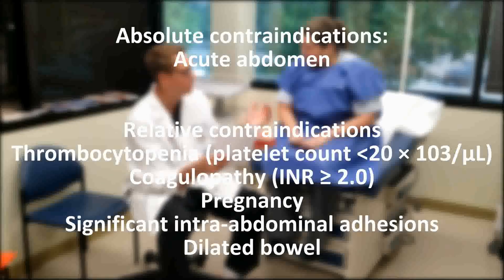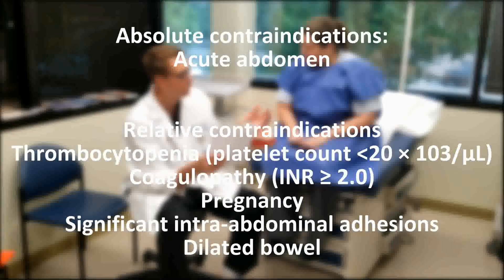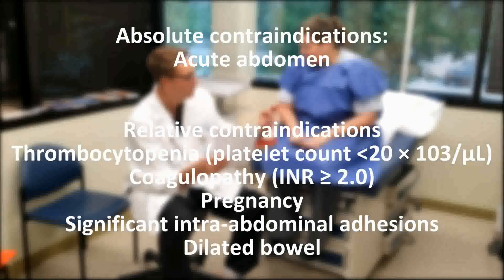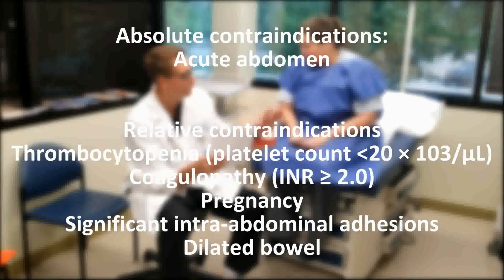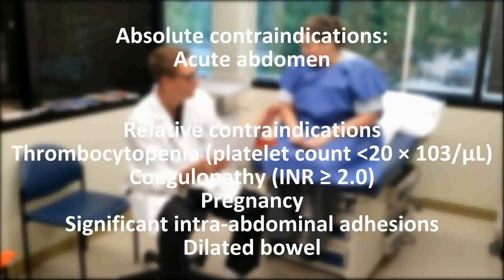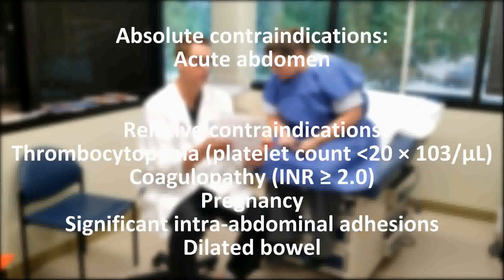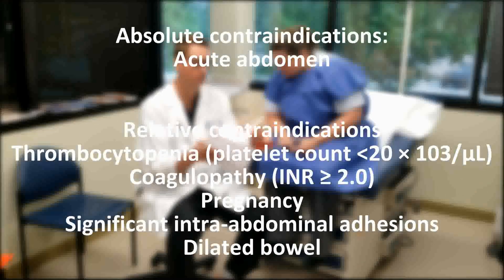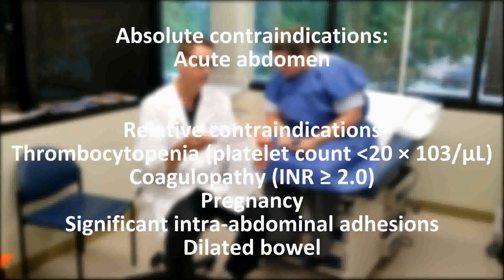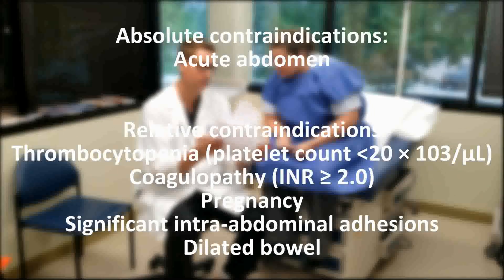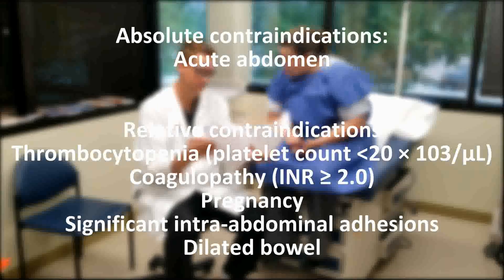Absolute contraindications include acute abdomen. Relative contraindications include thrombocytopenia — if thrombocytopenic, administer platelets prior to the procedure. Coagulopathy — if coagulopathic, administer fresh frozen plasma prior to the procedure. Additional relative contraindications include pregnancy, significant intra-abdominal adhesions, and dilated bowel.